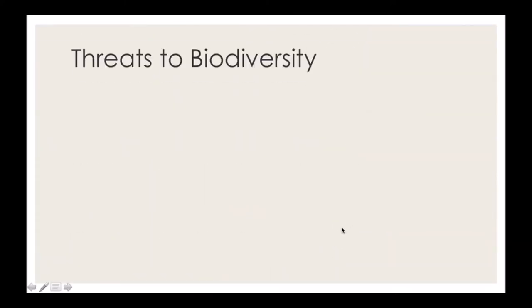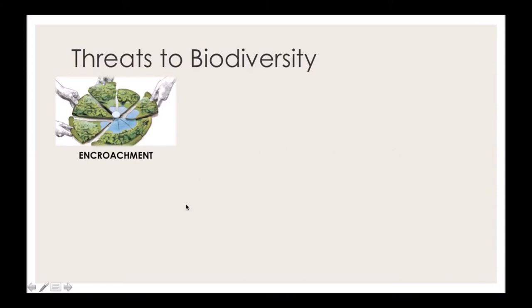There are five main threats to biodiversity. The first is encroachment, which means people are taking more space away from wild animals and wildlife to use for themselves. As people continue to expand where they live, it gives wildlife smaller and smaller regions to live in. That takes away resources, and we may see species become endangered or extinct because they can't reach areas with the precious resources they need to survive.